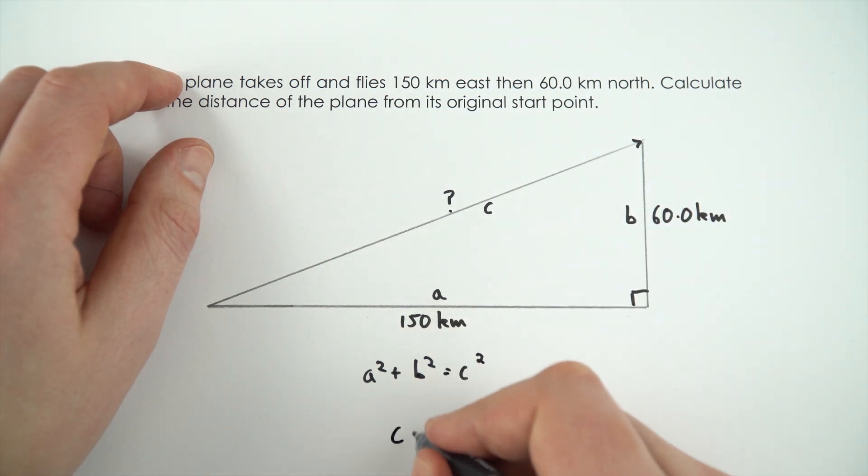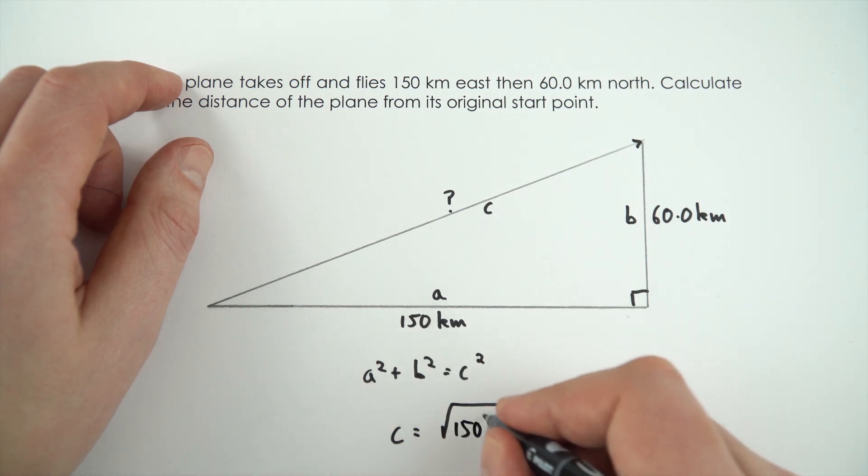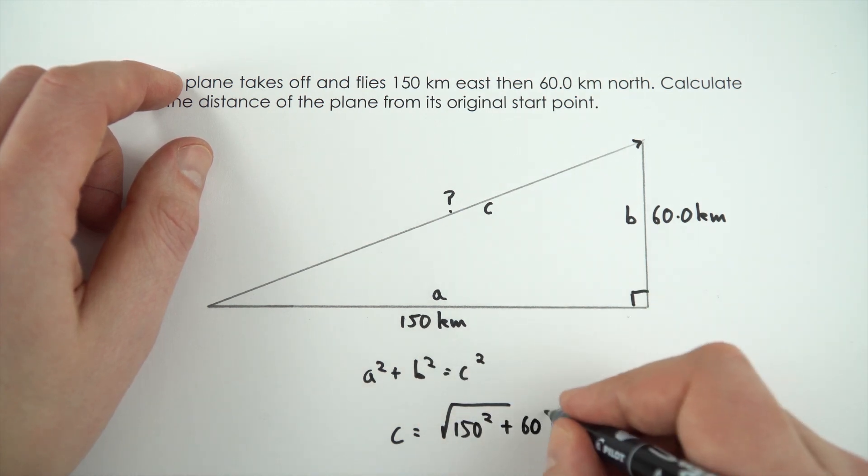So that means the length of this side is going to be equal to the square root of a squared, 150 squared plus b squared which is 60 squared.